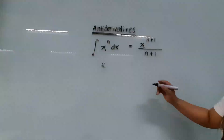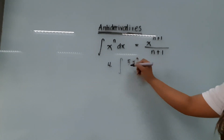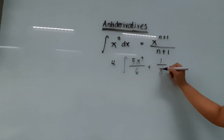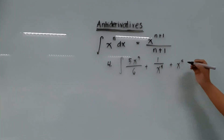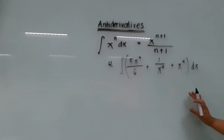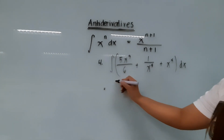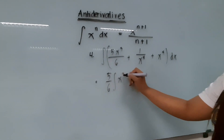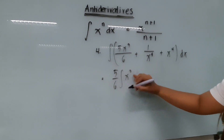Example number 4: the integral of 5x cubed over 6, plus 1 over x raised to 4, plus x raised to 4, quantity dx. First, bring all constants outside the integral signs. We have 5 over 6 times the integral of x cubed, dx — x cubed because it is in the numerator — and don't forget the dx.